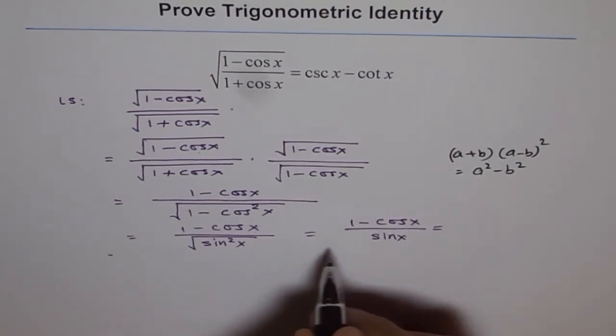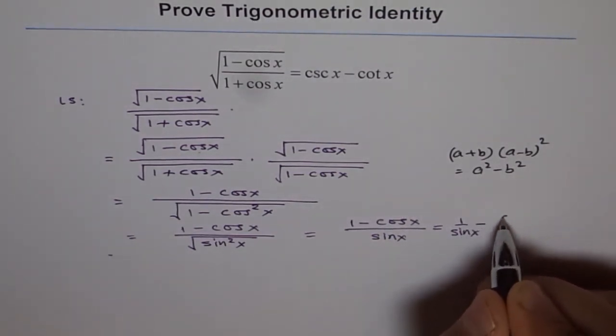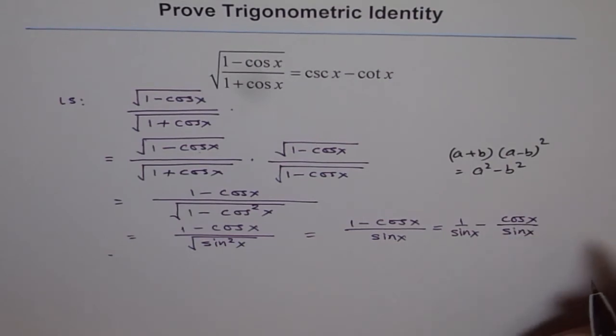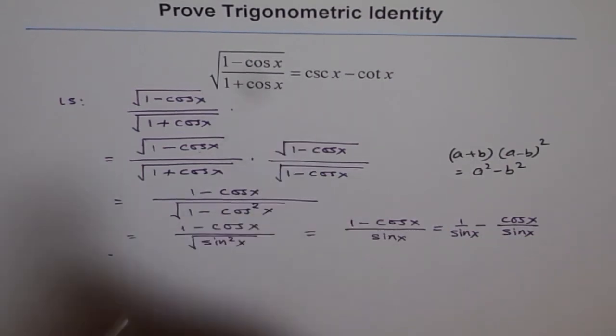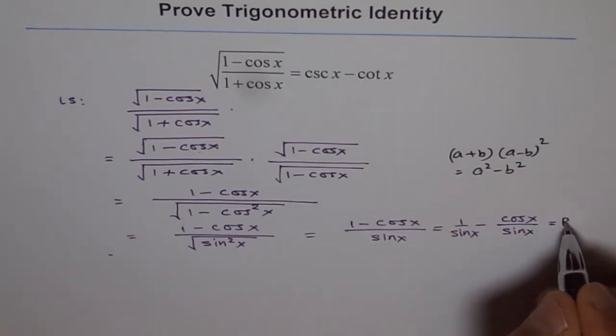Now I can write this as 1 over sine x minus cos x over sine x. You can see 1 over sine x is cosecant x, and cos x over sine x is cotangent x, so I get my right hand side.